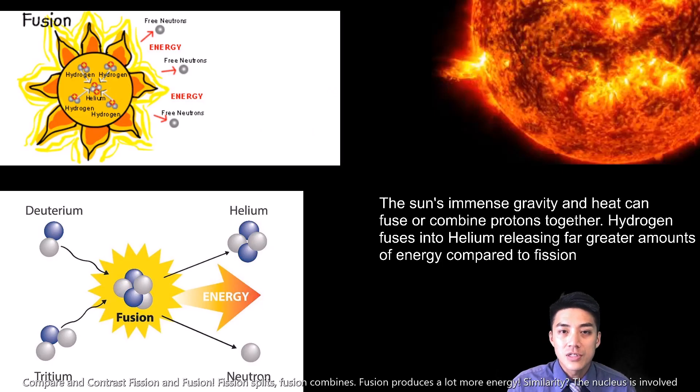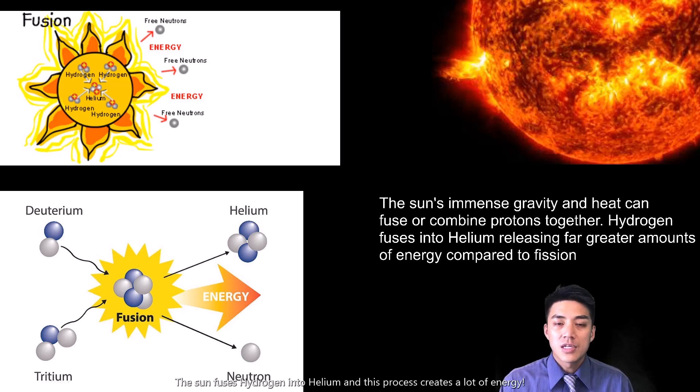You can think of fusion as the opposite of fission. Fission involves the splitting of nuclei, whereas fusion combines these protons together to create energy. This is how the sun creates most of its heat and its light. The sun is roughly 73% hydrogen. And every single second, it fuses 600 million tons of hydrogen into helium, converting mass into pure energy.